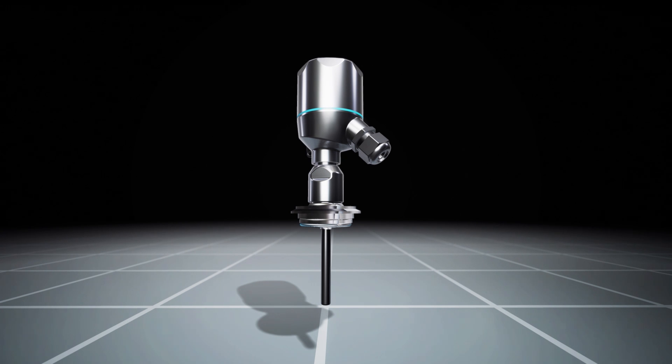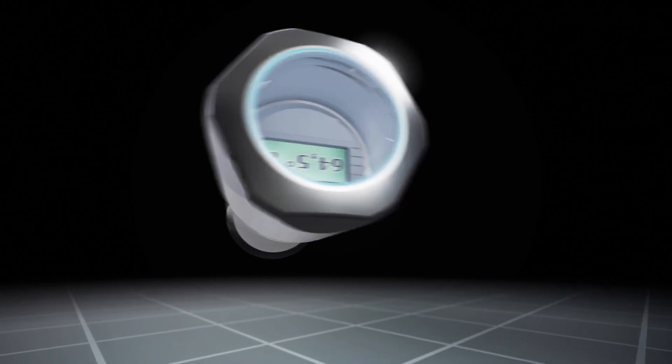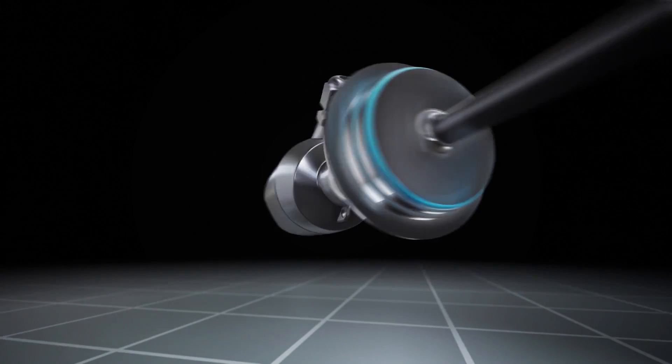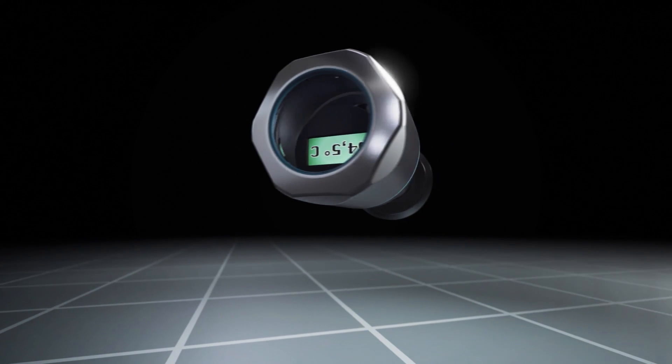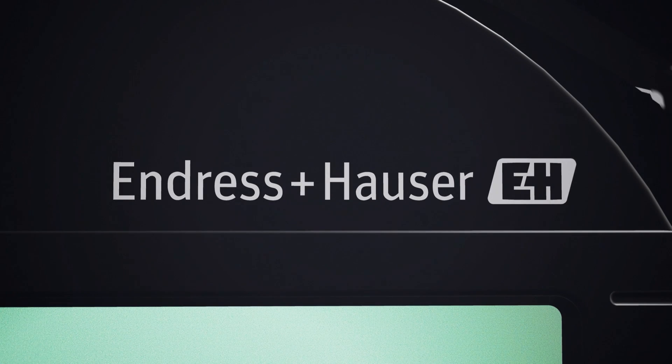They can also be used over a wide temperature range. Endress and Hauser temperature measuring devices facilitate the measurement of temperatures, both in standard applications and in areas of application with specific requirements, such as in hygienic processes, in installations where vibrations occur, or at high temperatures. We have the appropriate solution for any application.